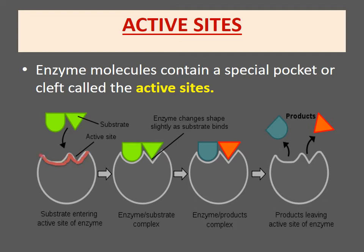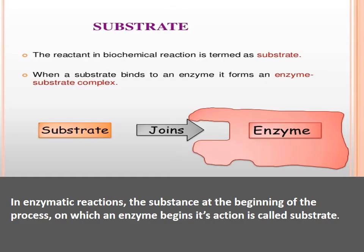The first term is active site. Enzymes are usually very large proteins, and the active site is just a small region of the enzyme molecule. As you observe in this slide, suppose this entire figure is the enzyme — then this particular region is called the active site. So, the active site is the area on the enzyme where the substrate or substrates attach to the enzyme.